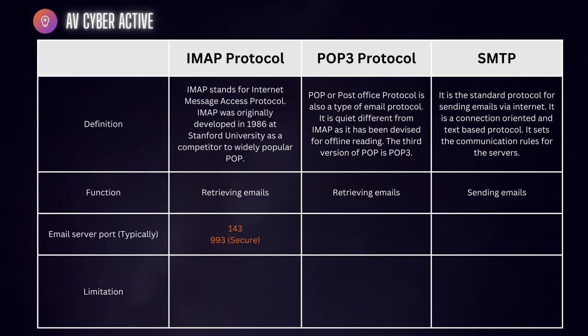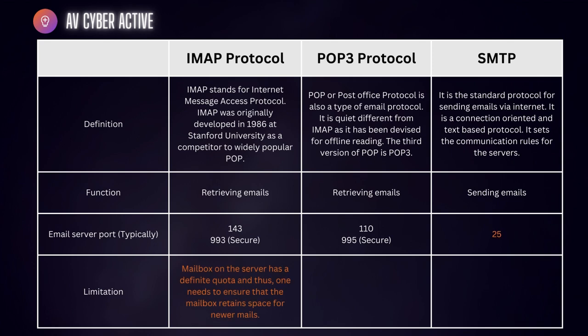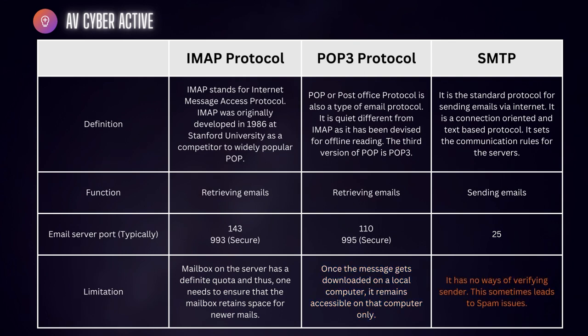For ports: IMAP typically uses port 143, and the secure version is 993. POP3 uses port 110, with the secure version at 995. SMTP unsecured is port 25. Regarding limitations: for IMAP, the mailbox on the server has a definite quota, so you need to ensure the mailbox retains space for newer emails. For POP3, once a message is downloaded to your local computer, it remains accessible even offline. For SMTP, it has no way of verifying the sender, which can lead to spam issues. However, you can apply SPF or DKIM security controls on your exchange server to mitigate this type of attack.